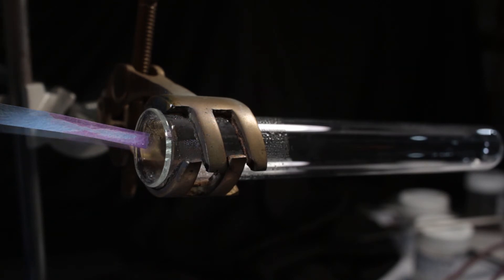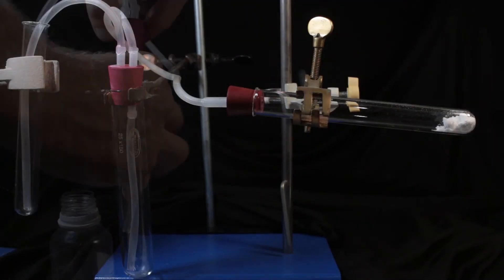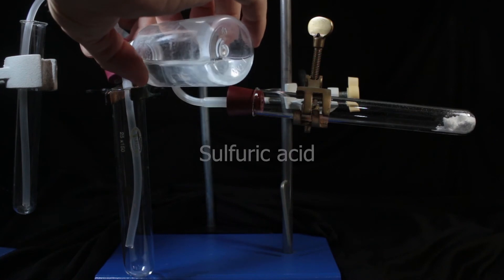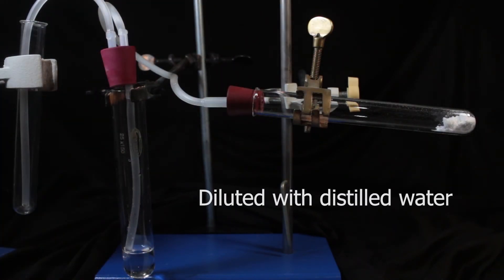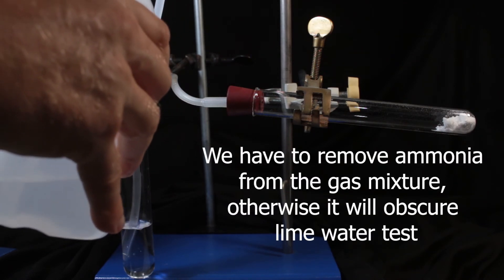Now for the third one, carbon dioxide. The test for it is not going to be that easy. I have to remove ammonia from the mixture. It would otherwise mess up with my lime water test. So I'm putting sulfuric acid in the middle, and I'm going to bubble the mixture of gases through it first.